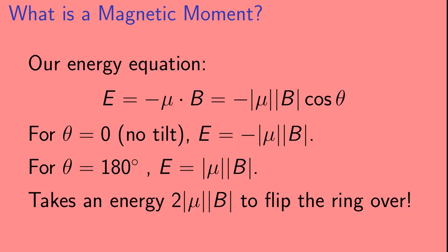Let's look at that energy equation again. E equals minus mu dot B, which equals minus the magnitude of mu times the magnitude of B times cosine theta. For the case where theta equals zero — where we haven't tilted the ring at all — E equals minus the magnitude of mu times the magnitude of B. On the other hand, for the case where theta equals 180 degrees, where we've flipped the ring over completely, E equals the magnitude of mu times the magnitude of B. This tells us that it takes an energy of 2 times the absolute value of mu times the absolute value of B to flip the ring over.